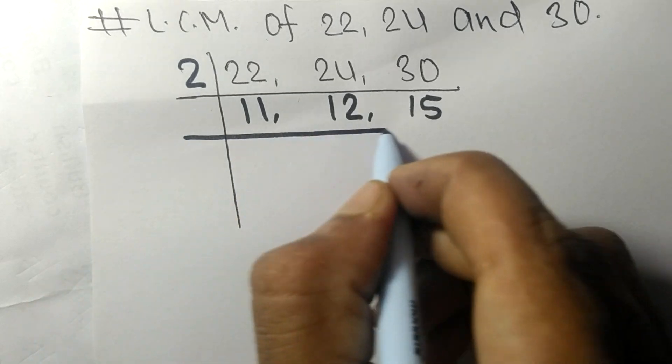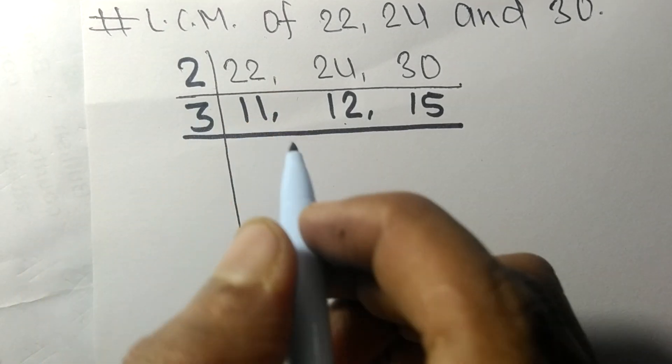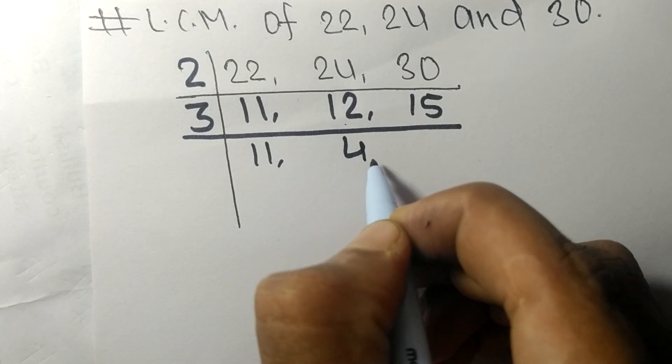Now 12 and 15 are divisible by 3. 11 is not divisible so it stays the same. 3 times 4 means 12, 3 times 5 means 15.